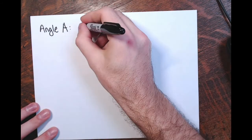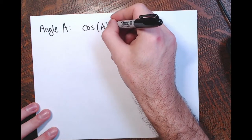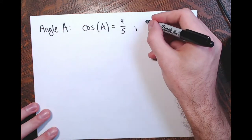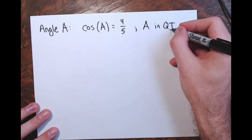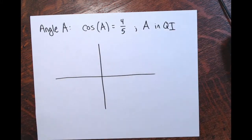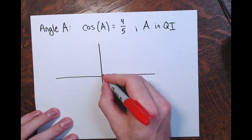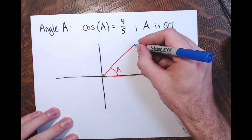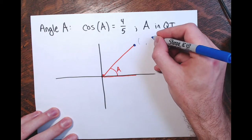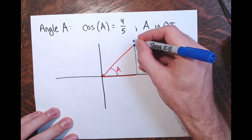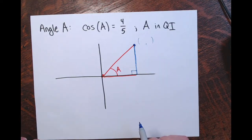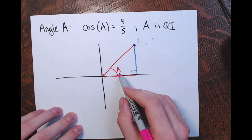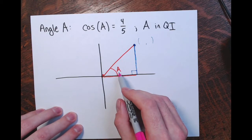We are told that the cosine of angle A is positive four-fifths, and we're told that angle A ends in quadrant one. So I'll draw a picture of that — starting from the positive x-axis, here's an angle that ends in quadrant one. I pick a point on the terminal side and draw a perpendicular segment to the x-axis, creating a right triangle. Since angle A is already acute, I don't need to put in a reference angle.